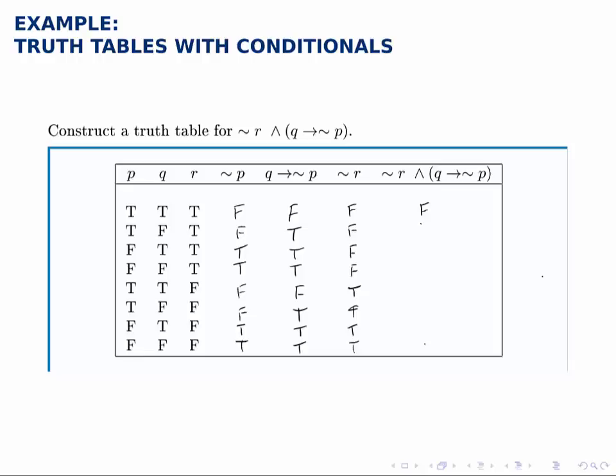So in the first case, it'll be false and then false, false, false, and then again false. But the last three are true because both pieces are true in those last three rows.